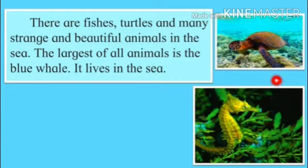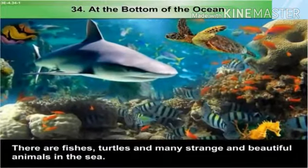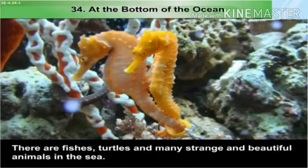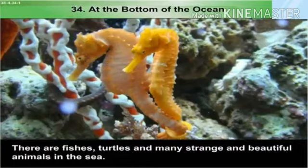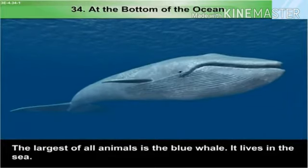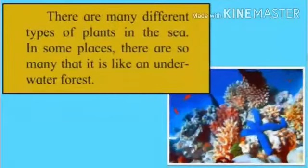Just as there are many beautiful animals on the land, in the same way there are many strange and beautiful animals in the sea — such as fish, turtles, seahorses, and many other beautiful animals. The largest animal also lives in the sea. There are many different types of plants in the sea, and in some places there are so many that it is like an underwater forest.